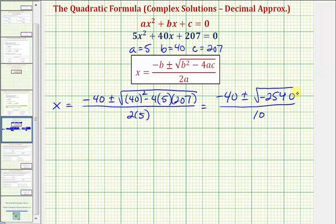So notice how the discriminant is negative, so we should recognize that we'll have two complex solutions. So we have -40, and then plus or minus the square root of—we know we can write -2540 as 2540 times -1, divided by 10.